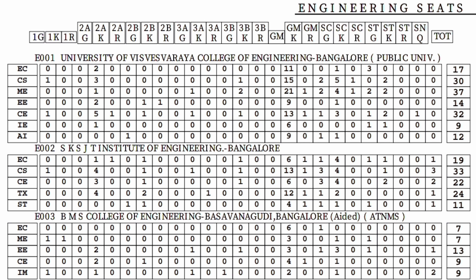GMK and GMR will be the next columns. Looking at the last column — the total — ECE has 17 seats total, CS has 30 seats, mechanical engineering has 37 seats, EE (electrical engineering) has 14 seats, civil engineering has 32 seats, industrial engineering has 9 seats, and artificial intelligence has 12 seats. That is the total seat matrix of UVCE.